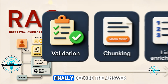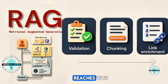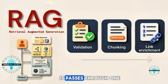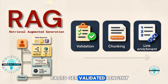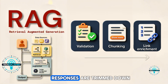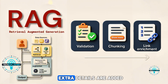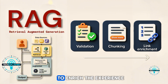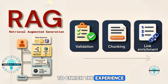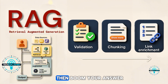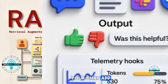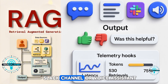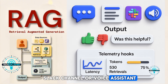Finally, before the answer reaches you, it passes through one last check. Facts get validated, lengthy responses are trimmed down, and helpful links or extra details are added to enrich the experience. Then your answer pops up neatly in your chat, app, Slack channel, or voice assistant.